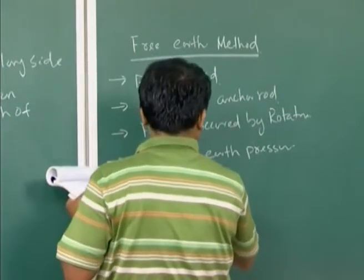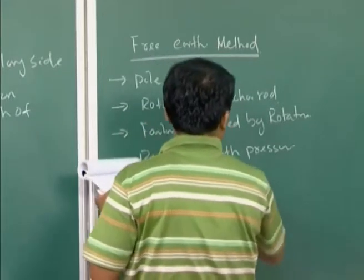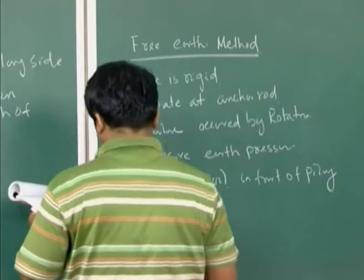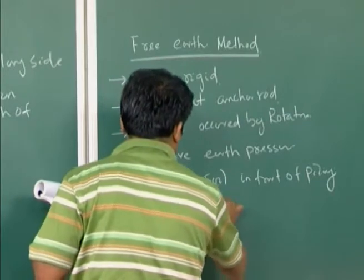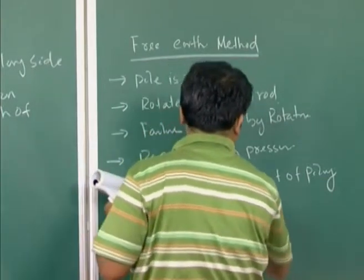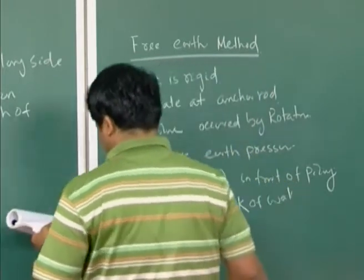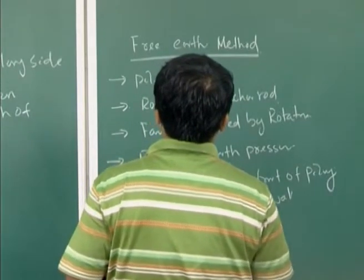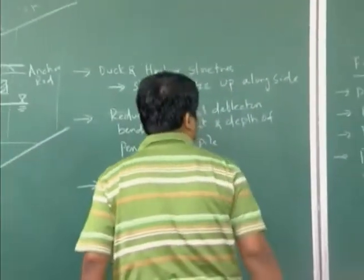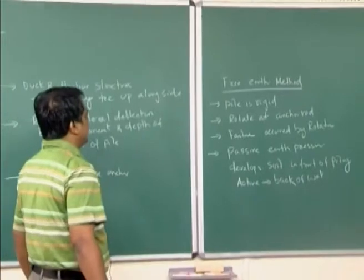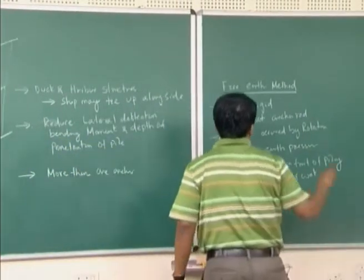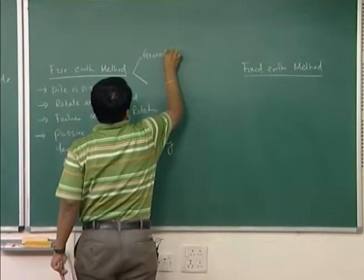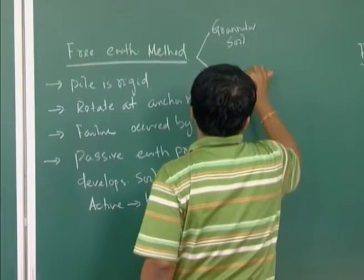Passive earth pressure develops in the soil in front of the piling, and active earth pressure develops in the soil back of the wall. In free earth method there are two cases: one is for granular soil and the other is for cohesive soil.